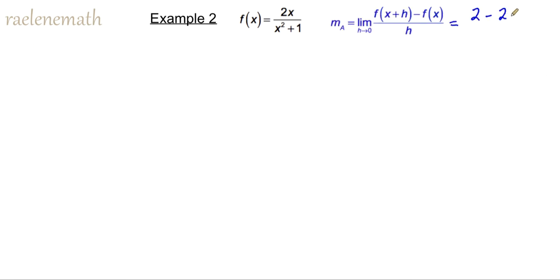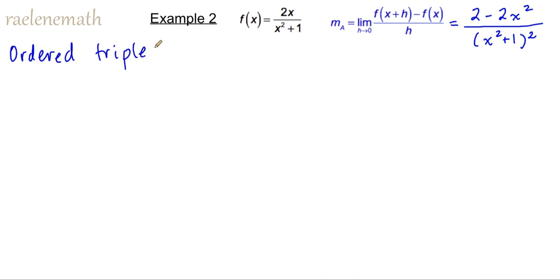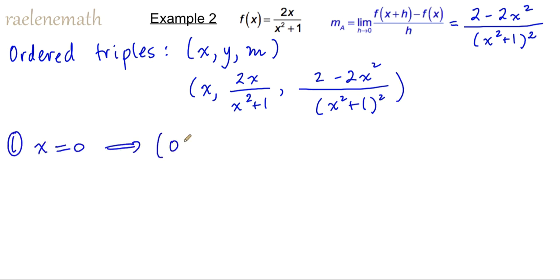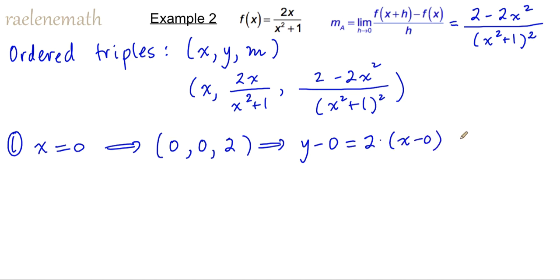To confirm that we have the right tangent slope formula or function of x, we are going to take three different x-coordinates, plug them in, and then sketch the tangent line. I'm going to introduce you to the idea of ordered triples — one more piece of information from an ordered pair. It gives us the x-coordinate, the y-coordinate, and the slope of the tangent line so that we can write the equation in point-slope form. In general, the ordered triples are going to be given by x, then 2x over x squared plus 1 for the y-coordinate, and 2 minus 2x squared all over x squared plus 1 all squared for the slope. Substituting x equal to 0, the ordered triple gives us 0 for x, 0 for y, and 2 for the tangent slope, which gives a point-slope form of y equals 2x.